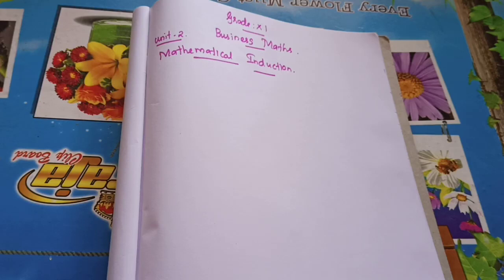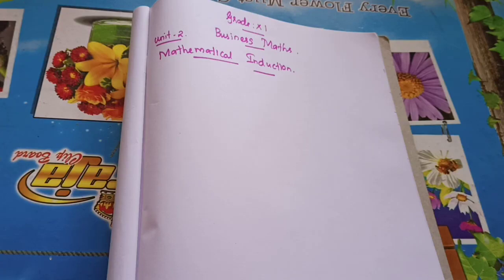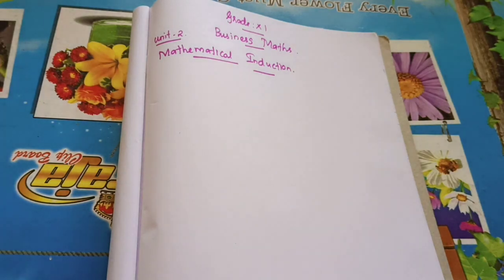Let P(n) be a given statement for n belonging to N. Whatever statement they give you, you need to assume it is P(n). The first initial step is: let the statement be true for n equal to 1. In the place of n you need to substitute the value 1. When you substitute n=1, if the LHS and RHS become equal, you say the statement is true for P(1).